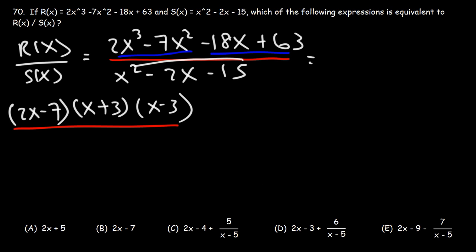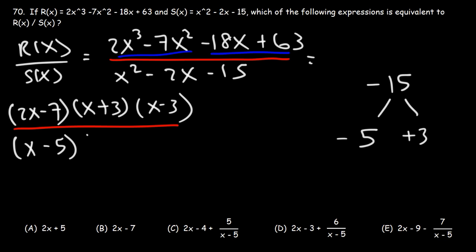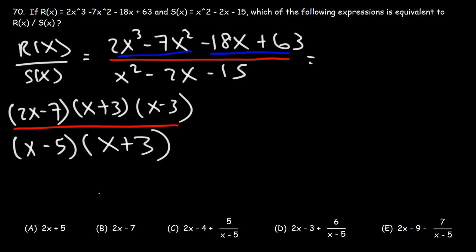Now let's focus on factoring the denominator trinomial. We need two numbers that multiply to negative 15 but add to negative 2. That's going to be negative 5 and positive 3, since negative 5 plus 3 equals negative 2. So we can write this as x minus 5 times x plus 3. At this point we can simplify — cancel the factor x plus 3. So we have 2x minus 7 times x minus 3 over x minus 5.